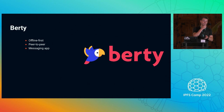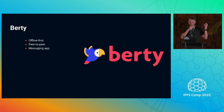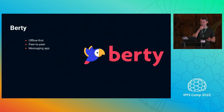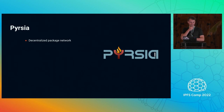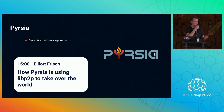I also want to highlight Bertie. I think Bertie is always the perfect way to explain libp2p, like a chat application — if you want to see how to do chat with libp2p in a sophisticated way, check out Bertie. And then the last project I want to highlight is Persia — we have Elliot give a talk on Persia and using libp2p to take over the world.